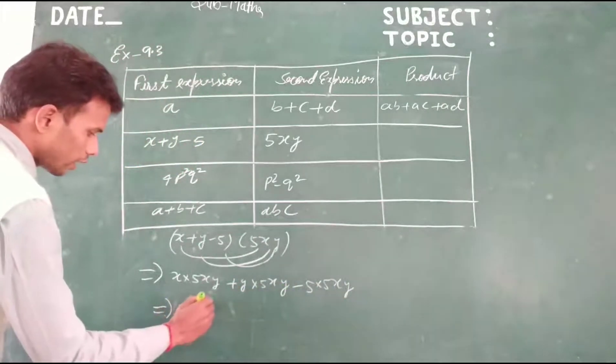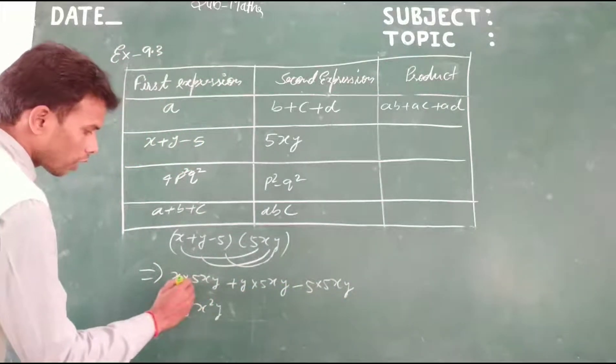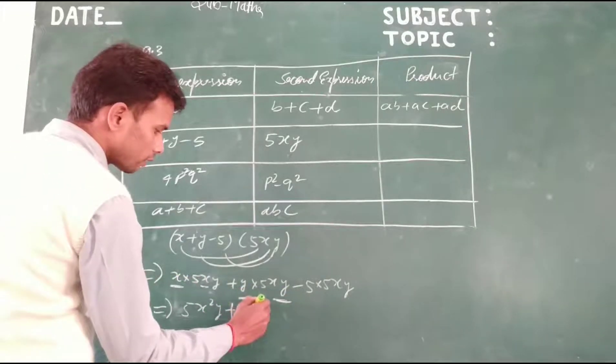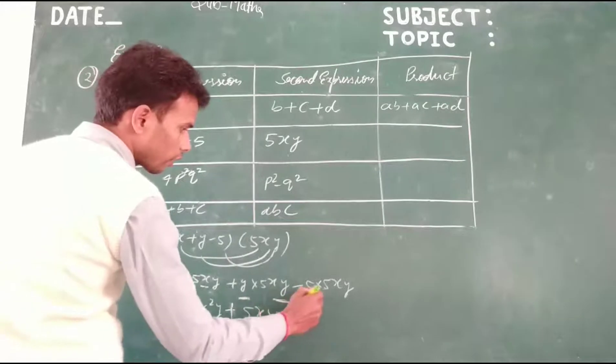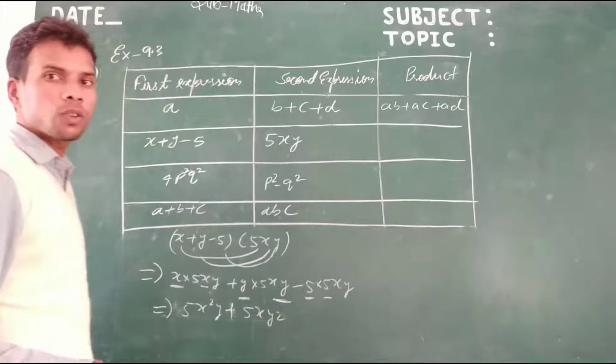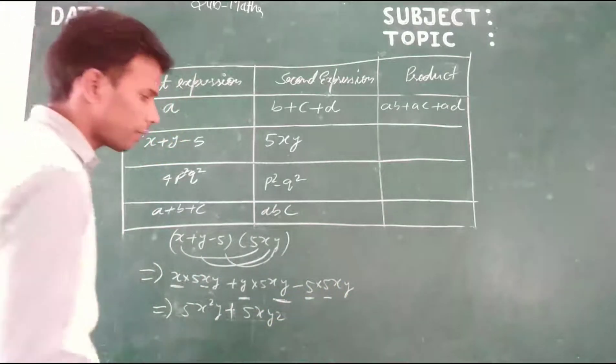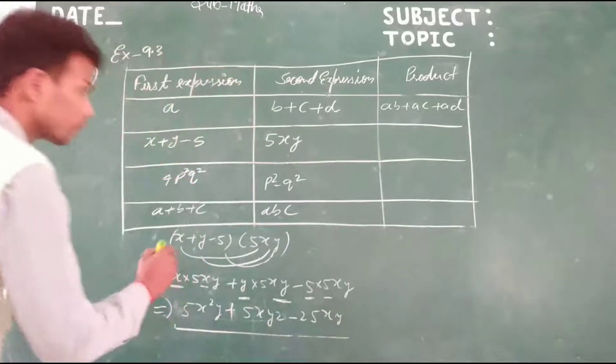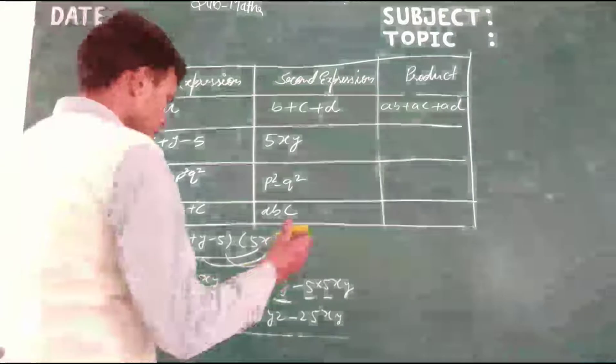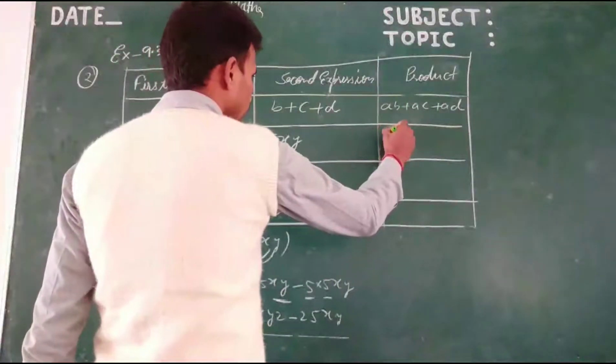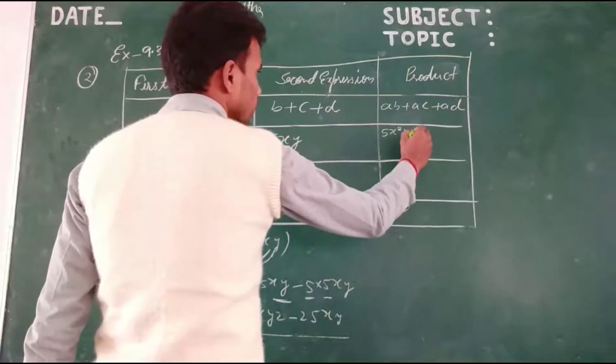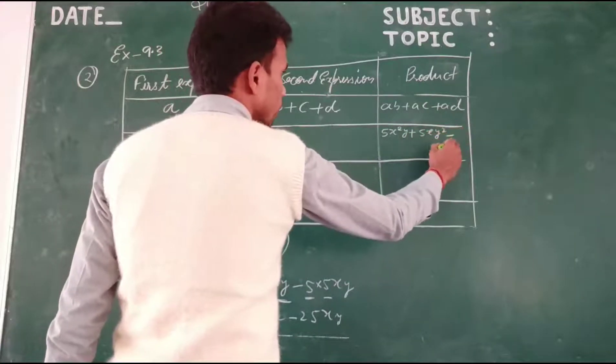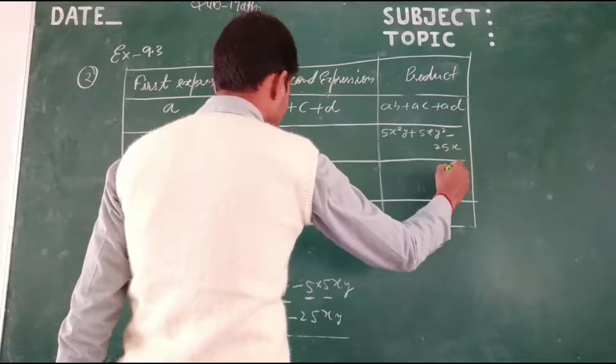5X squared Y, the bases are same, plus here also bases are same, 5Y means 5XY squared minus 5XY. 25, coefficient to coefficient, variable to variable, 5XY times 5XY. This is the product: 5X squared Y plus 5XY squared minus 25XY.